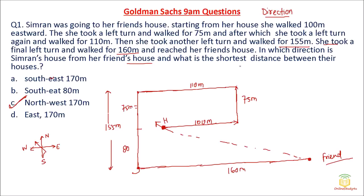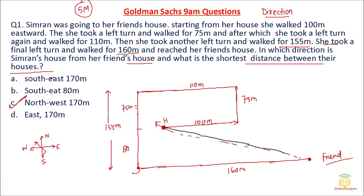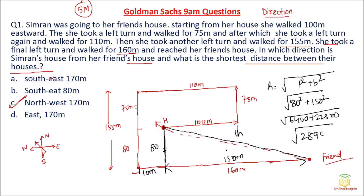There is no need to find the shortest distance between their houses — do not waste your time, you already got the 5-mark answer. But I will tell you anyway. To calculate the shortest distance, I need to know the horizontal and vertical components. The vertical component is 80 meters and the horizontal component is 10 meters short of 160, giving 150 meters. Using Pythagoras: hypotenuse² = 80² + 150² = 6400 + 22500 = 28900, so hypotenuse = 170 meters. But this part was not required.